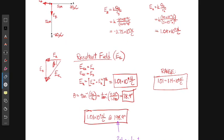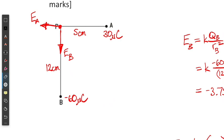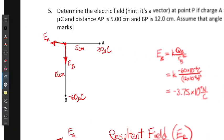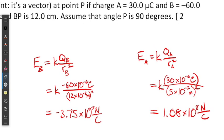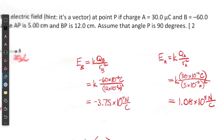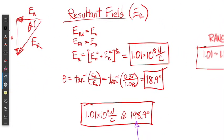For number five, you were asked to determine the electric field as a vector at point P, where charge A is 30.0 microcoulombs and charge B is negative 16 microcoulombs, with given distances. This problem mainly combines things we did previously. Looking at the diagram, we're somewhat lucky that our vectors are at right angles to each other, which simplifies the vector addition. We calculate the magnitude of each electric field contribution.